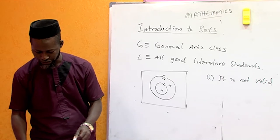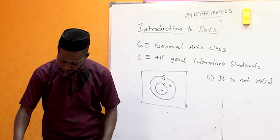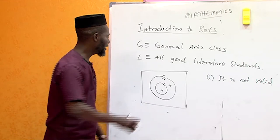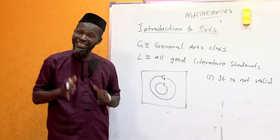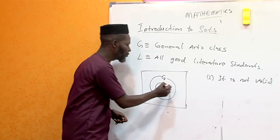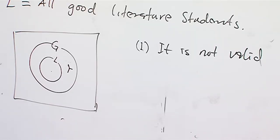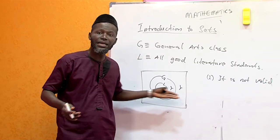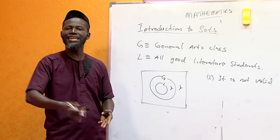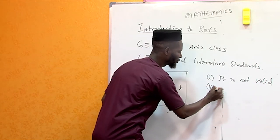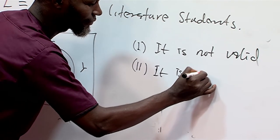The second statement: Adu is not a good literature student, therefore he is not in the general arts class. Now for Adu not to be a good literature student, two things are possible: Adu may be inside G but outside L, or Adu may be completely outside G. Because there is doubt, there is no agreement, and therefore the second statement is also not valid.